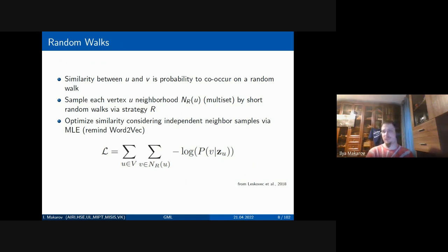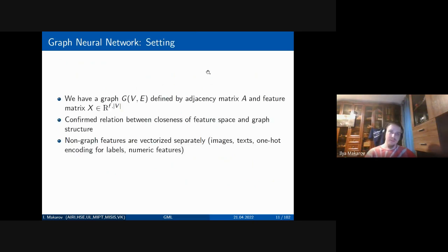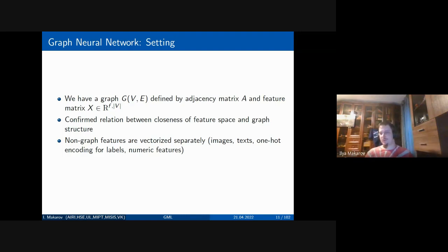Many graph embedding approaches work only with structural information and don't tackle features stored in nodes or edges. We need automated methods that work with both attribute features and graph features. In the same 2016, graph neural networks appeared. A graph is defined by an adjacency matrix A where element ij equals 1 if vertex i is connected to vertex j, plus a feature matrix X. Non-graph features are vectorized separately — images as embeddings from a pre-trained ImageNet network, text as text embeddings, categorical features as one-hot encodings, and numerical features may be normalized.